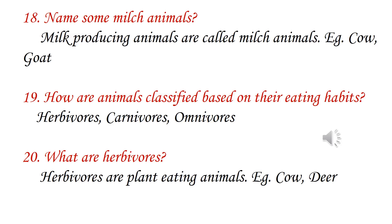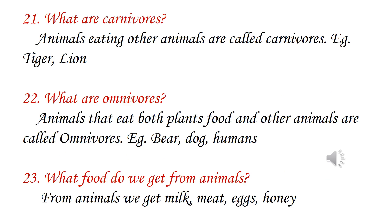How are animals classified based on their eating habits? Herbivores, carnivores and omnivores. Herbivores are plant-eating animals — example: cow, deer. Animals eating other animals are called carnivores — example: tiger, lion. Animals that eat both plant food and other animals are called omnivores — example: bear, dog and humans.